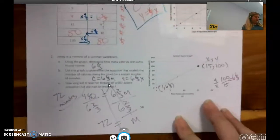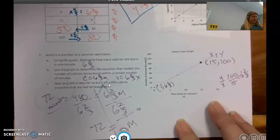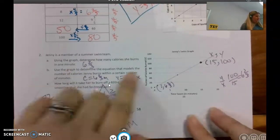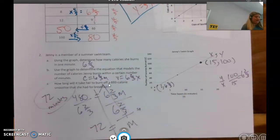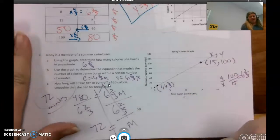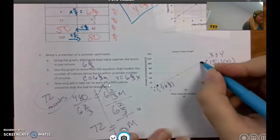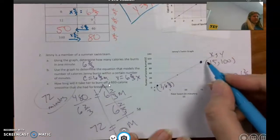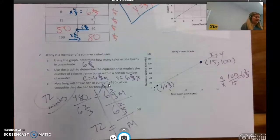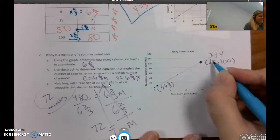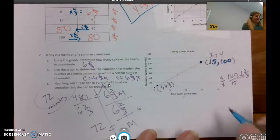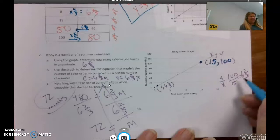Number two, this was about the swim team and we had to use the graph to determine the number of calories burnt in one minute. But when I looked here at one, I couldn't really tell, so what I had to do is find what I could tell, and by could tell I mean one that I could read precisely.